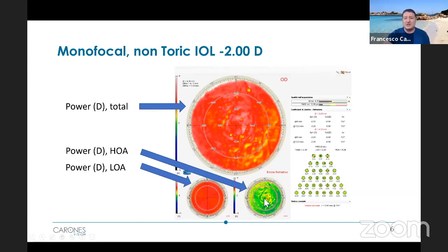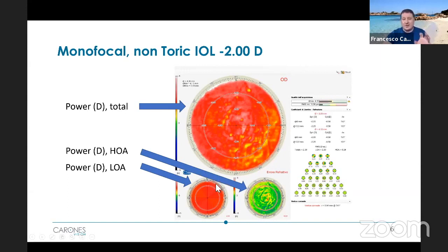There is a little bit of background noise, as you can see, but the map generally looks green, meaning plain. So in this case we have an IOL that is myopic as an outcome, but with almost no high order aberrations.